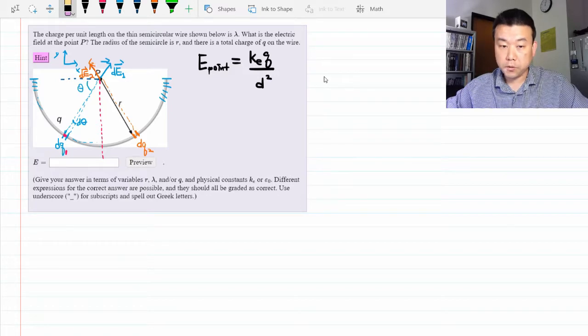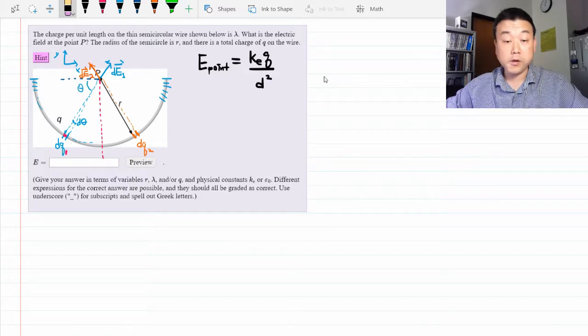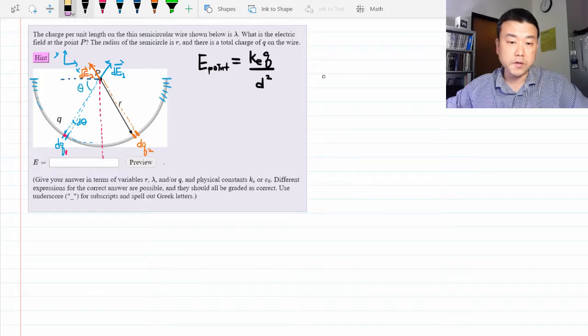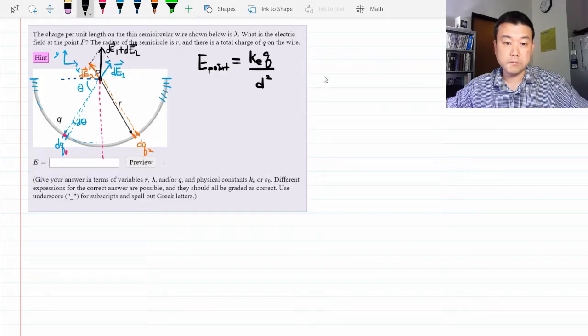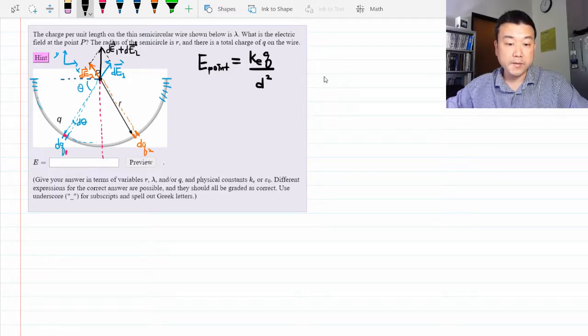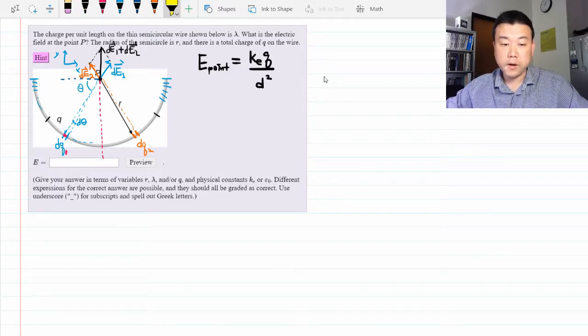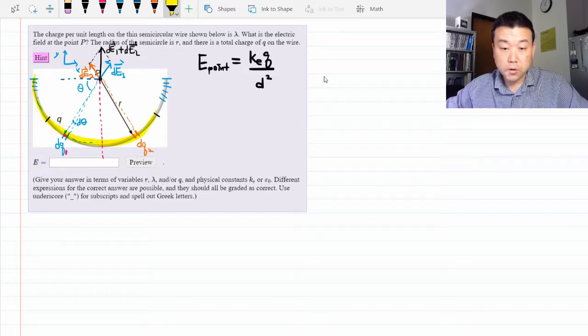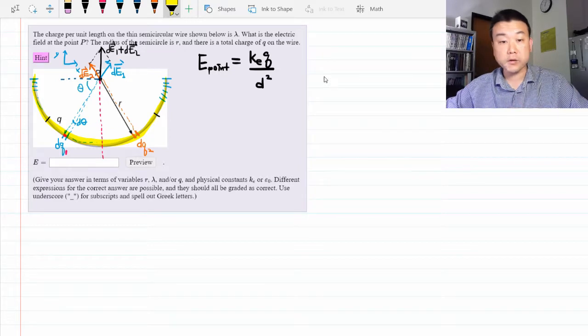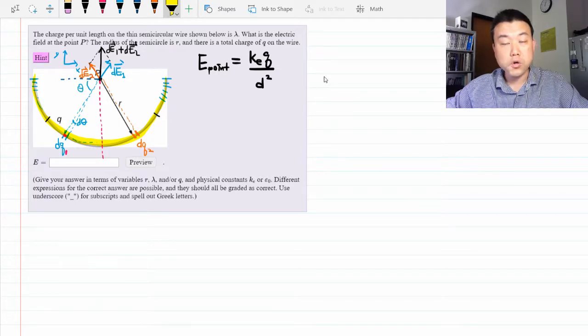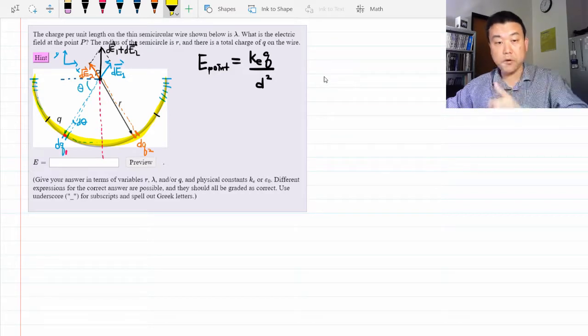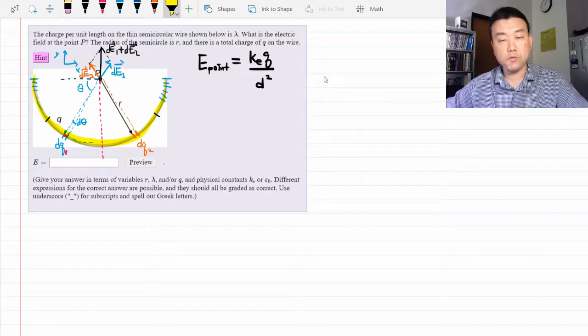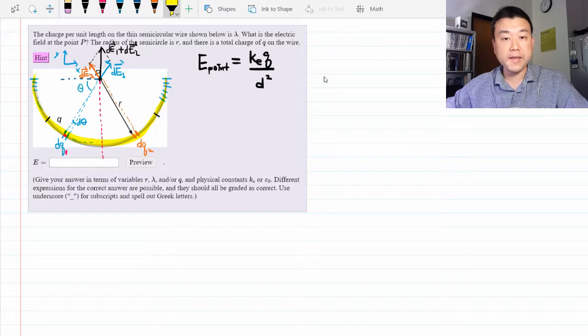So the only component you have to worry about is the vertical component for the addition of these two vectors. And because of the symmetry in the setup, you can find these pairs for any charge element along this half ring. So we can go through this calculation assuming the horizontal component will cancel out. And just calculate the vertical component knowing that that will be the only component of the net electric field.